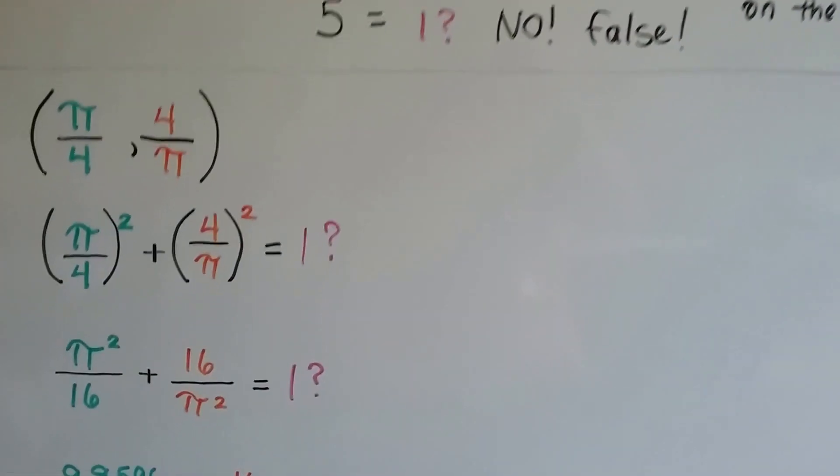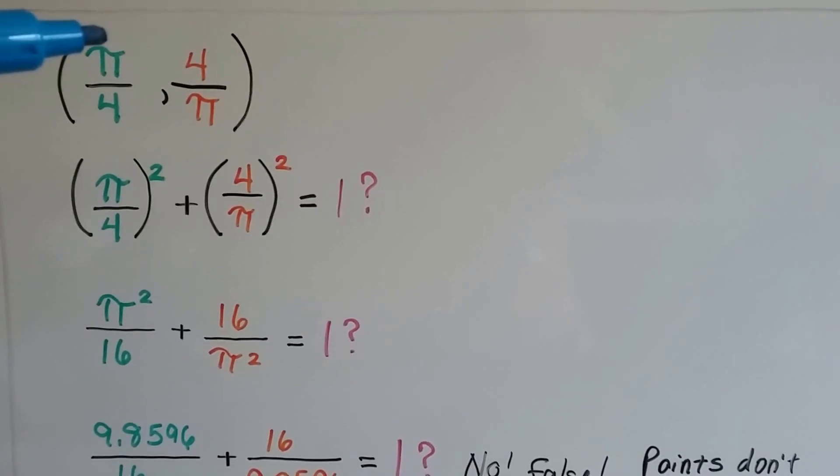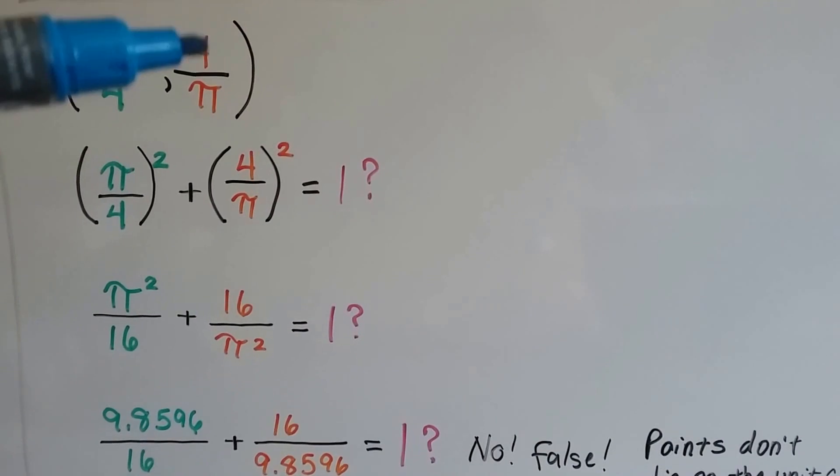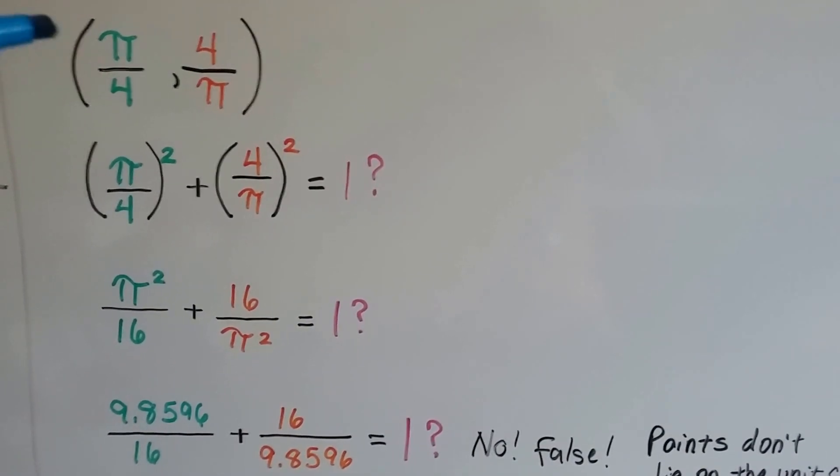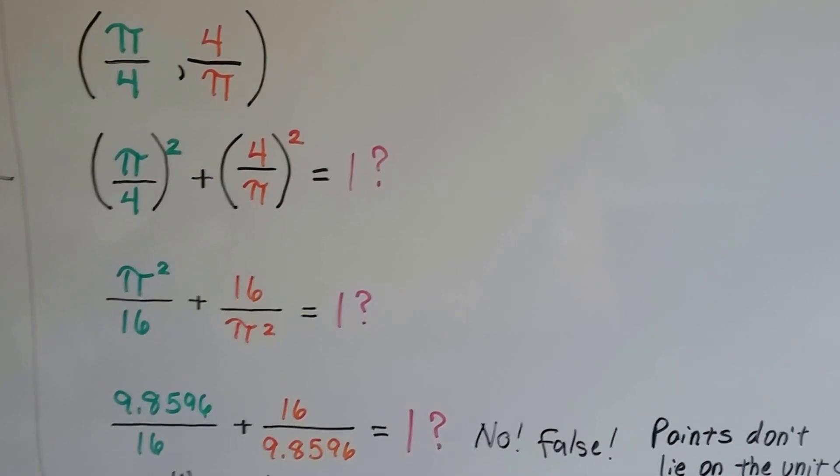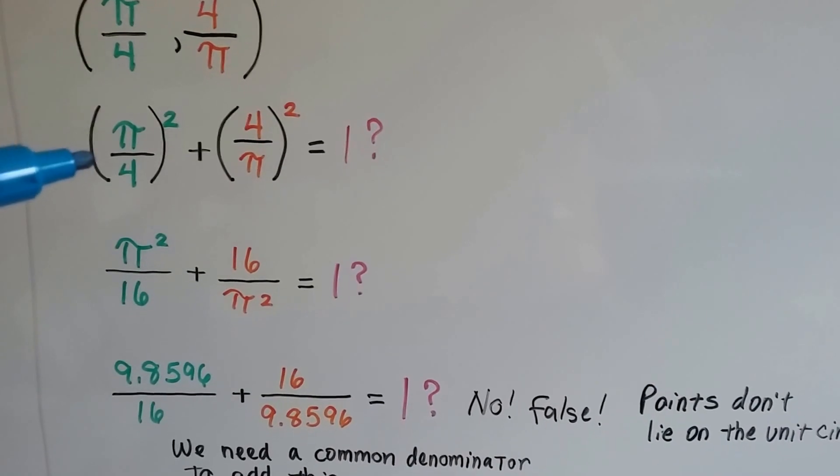Now take a look at this one. This one's a little bit more confusing. We've got our x value is the quotient of pi and 4, and our y value is a quotient of 4 and pi. Now you would think, oh yeah, same numerator, same denominator, right? Well, nope, don't jump the gun here, because we have to put it in the x squared plus y squared equals 1 format.